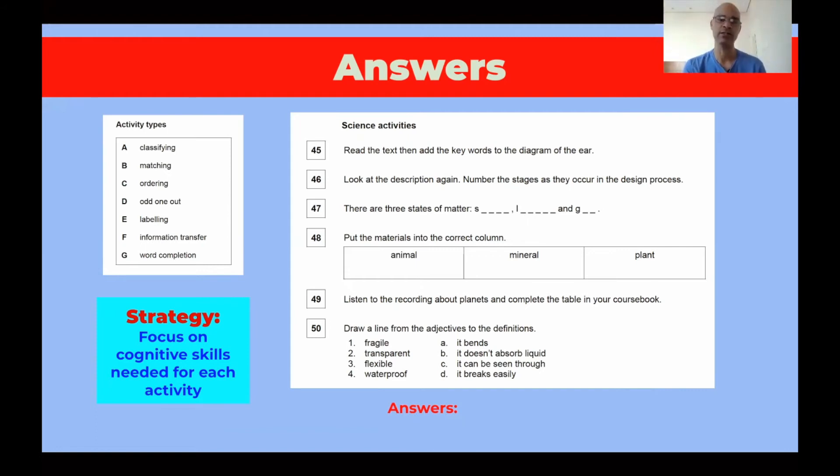All right, so let's look at question number 45. 45 is asking students to read the text and then add the keywords to the diagram of the ear. So there's a drawing of an ear and there's a diagram. So students are going to add the keywords from the text to the diagram of the ear. Well, this is a clear example of labeling. Students are going to be labeling a diagram. So 45, that's going to be letter E.